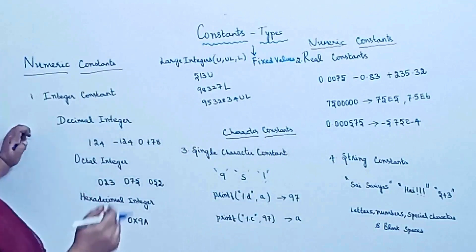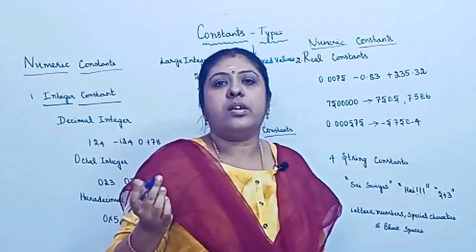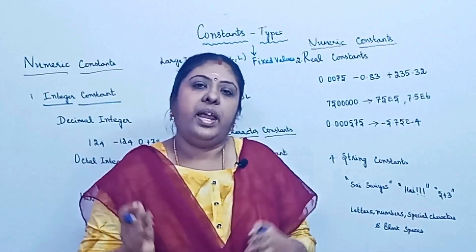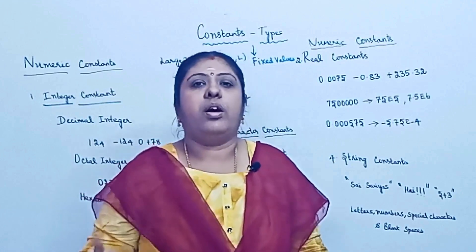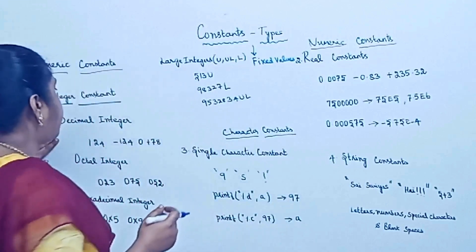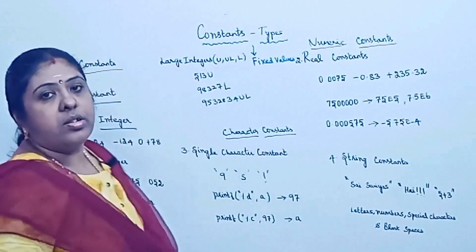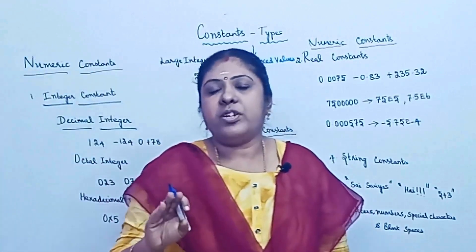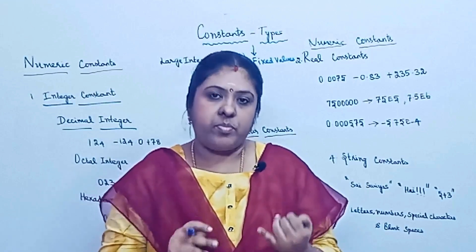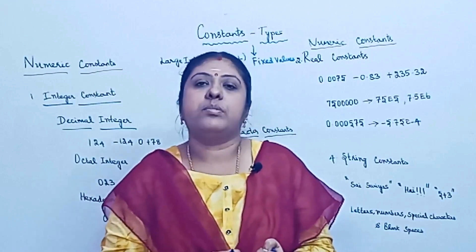Moving on to integer constants — we all know that an integer is a whole number, consisting of a sequence of digits. It can be any positive or negative number. The integer constant also refers to three types: decimal integer, octal integer, and hexadecimal integer.